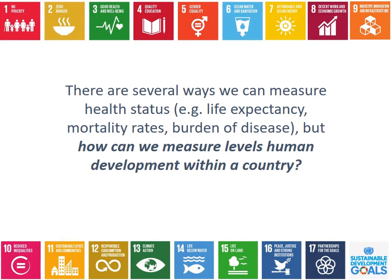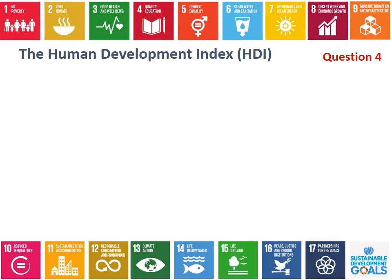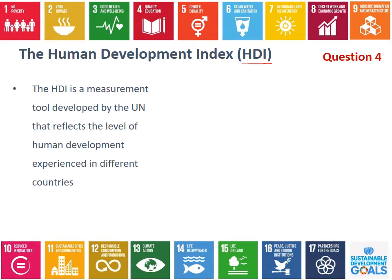Now that we have an idea of what human development is — about choices, opportunities, and a good standard of life — how do we measure it? We know that with health status we can use things like life expectancy, mortality, and burden of disease. But how could we measure levels of human development within a country? The tool we use is called the Human Development Index, or HDI. It's really important to understand that human development is a concept, and the HDI is a tool or score that countries are given to indicate their level of human development. It was developed by the United Nations.